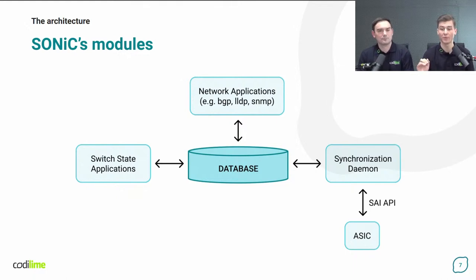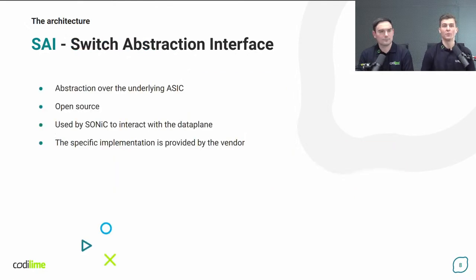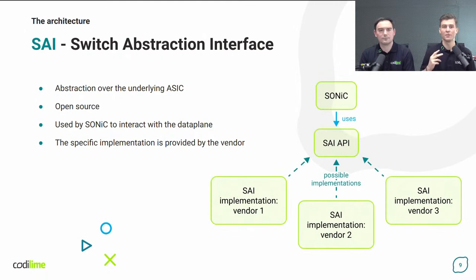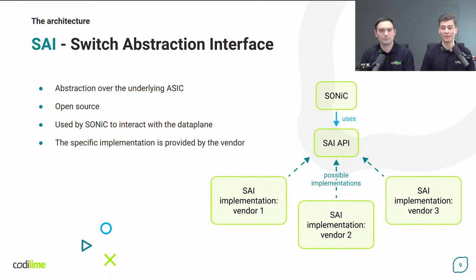SAI is a fundamental element of the Sonic system. SAI stands for Switch Abstraction Interface. It is a generalized abstraction over the underlying ASIC serving the data plane, so over the underlying vendor-specific hardware. It's not developed as a part of Sonic, but it's used by Sonic — it's a separate open source project governed by the Open Compute Project Foundation. What's really important about SAI is that it is just an API with a set of rules on how to call it and what it means, and it's up to the hardware vendors to implement that API. Simply speaking, control plane code written for a single common SAI definition can work with multiple different vendor implementations and different vendor hardware. And that's a key Sonic feature.